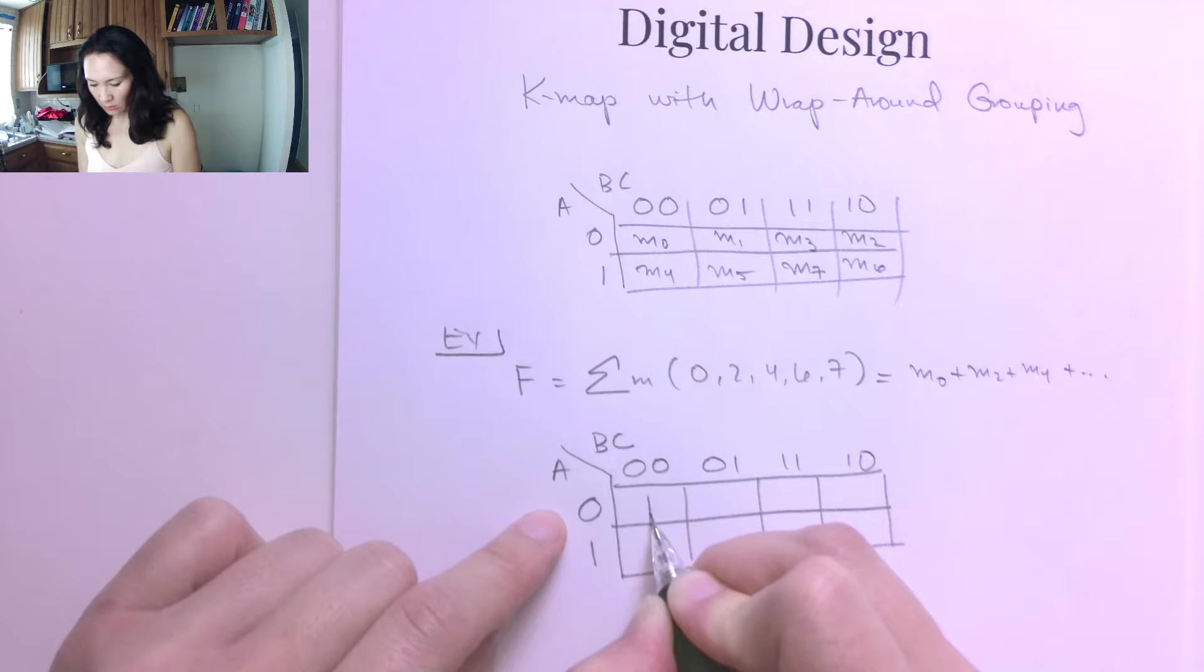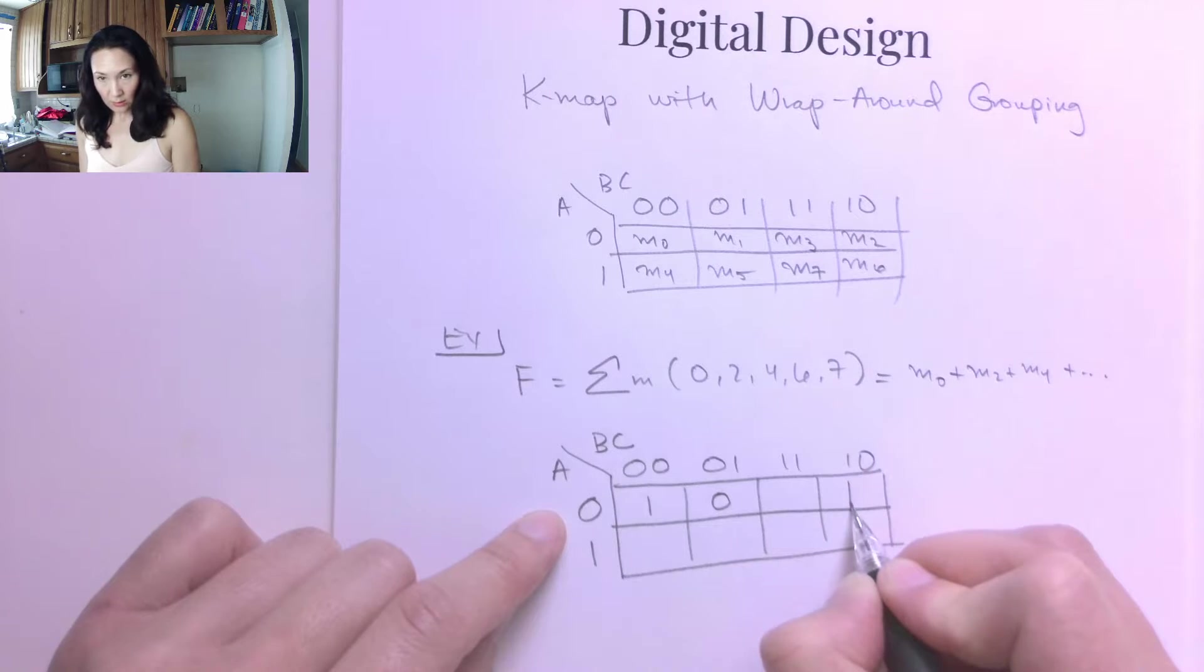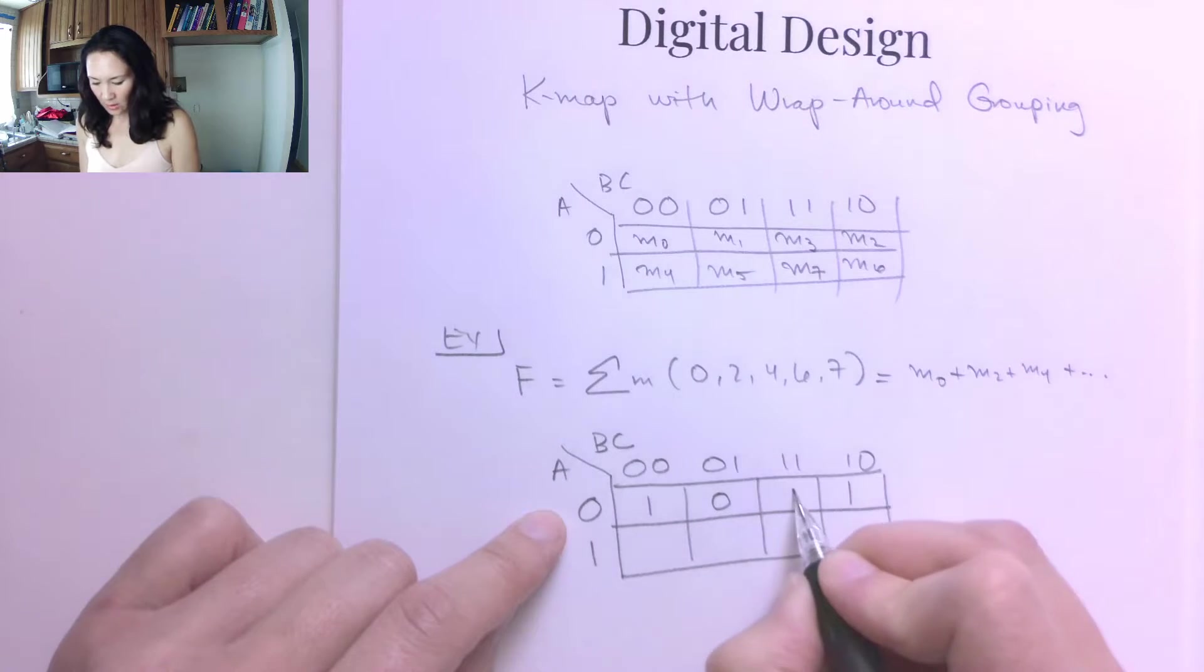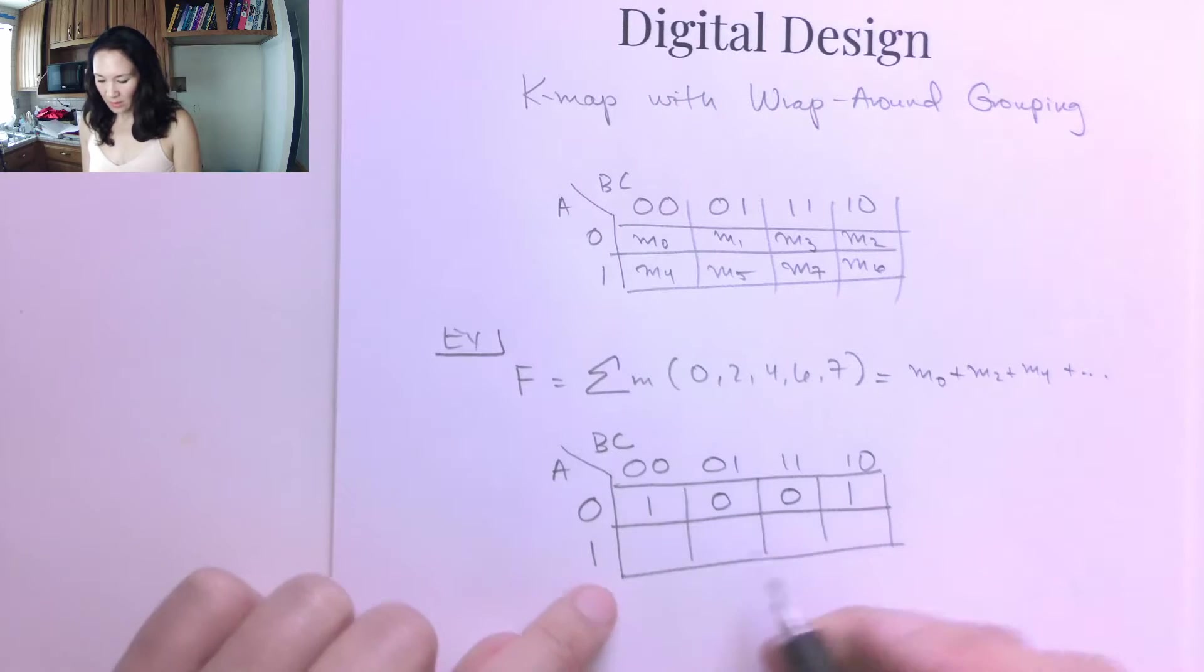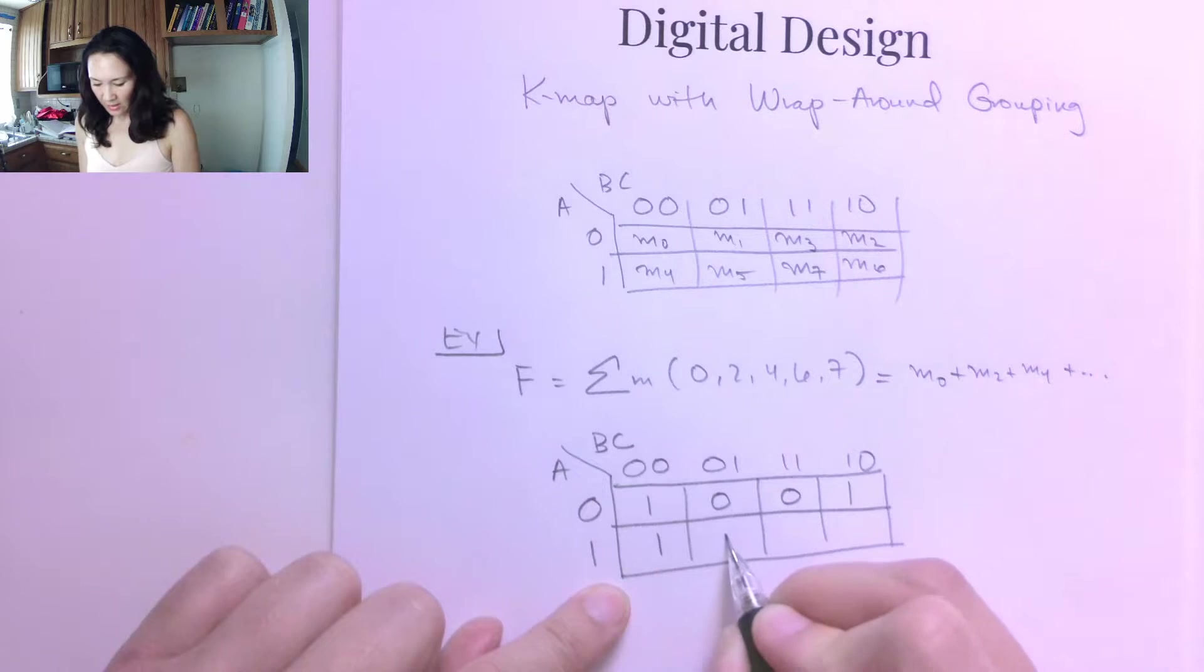So that's minterm 0. Minterm 1 is not in the list, so that gets a 0. Minterm 2 is in the list, so it gets a 1. Minterm 3 is not in the list, so it gets a 0. Down here, minterm 4 is in the list, so it gets a 1. Minterm 5 is not in the list, so it gets a 0. Minterm 6 is here, it gets a 1, and minterm 7 gets a 1.